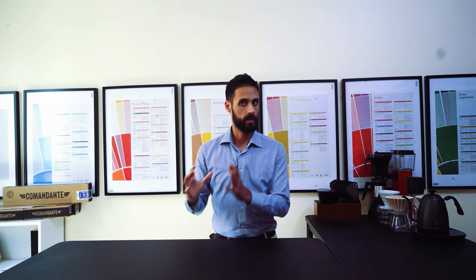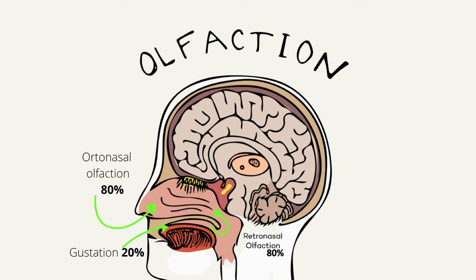Let's talk about how we actually assess flavor. In the picture you will see in the video, you can find a graph of the human head with arrows and descriptors. When we are assessing flavor, we assess it with orthonasal olfactory and gustatory sensations. Gustatory sensations are the 5 basic tastes perceived in the mouth, and olfactory sensations are aromas we perceive through the nose while inhaling and exhaling. Inhaling is called orthonasal, while exhaling is called retronasal. When assessing flavor, 80% of the evaluation goes through olfactory — through breathing in and out — and only 20% goes through taste.